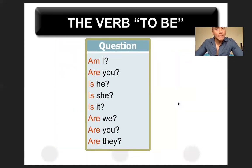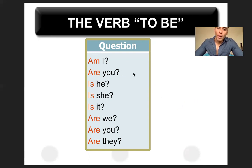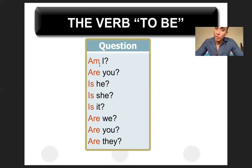Y para las preguntas, ¿qué pasa? Muy fácil — solamente invertimos el verbo con el sujeto. Ahora el verbo va primero: Am I, are you, is he, is she, is it, are we, are you, are they? Estamos invirtiendo para hacer una pregunta. Are you from Ecuador? — ¿eres de Ecuador? En una oración positiva: you are from Ecuador. Pero cuando es una pregunta, siempre el verbo to be se mueve al principio.